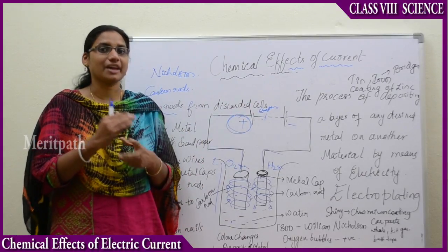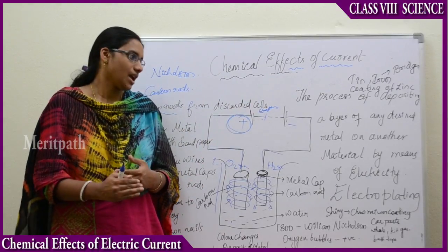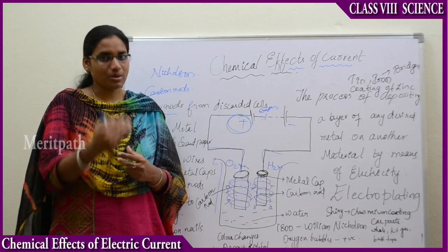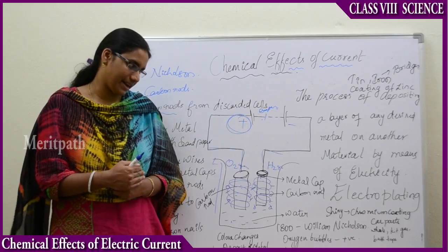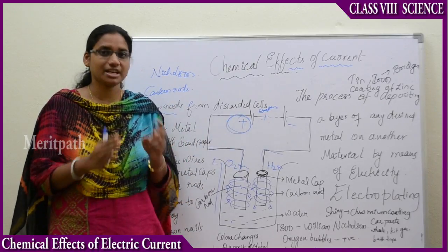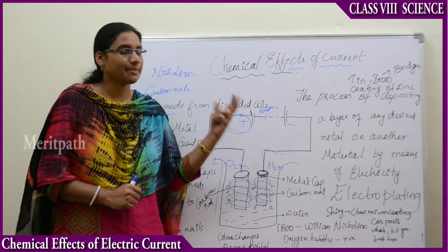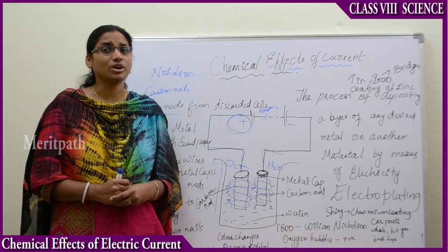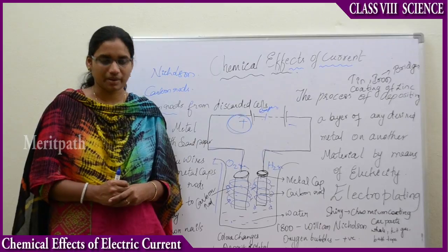We have to deposit by the process of electricity. By means of electricity, when we deposit, then it is said to be as electroplating. Now, let us see some examples of electroplating and what are the advantages and applications of electroplating.